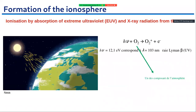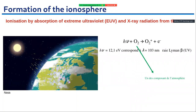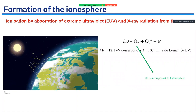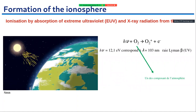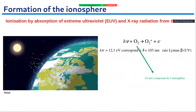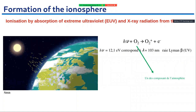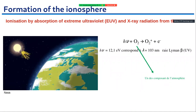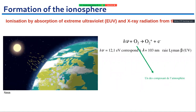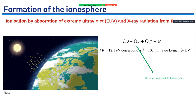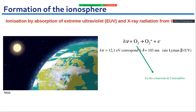Here is an example of ionization by absorption of extreme EUV light: the oxygen atom absorbs a photon and produces a positive ion plus a free electron.